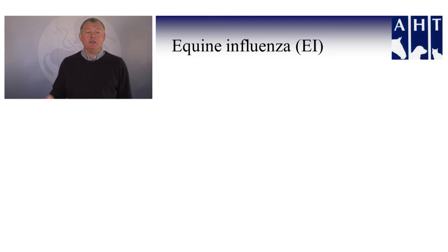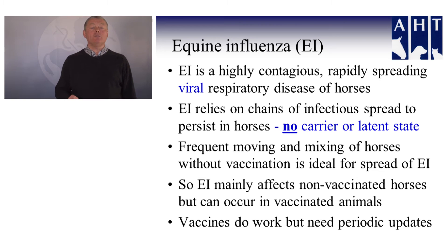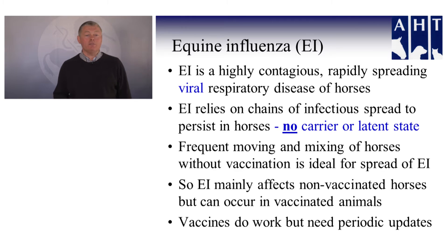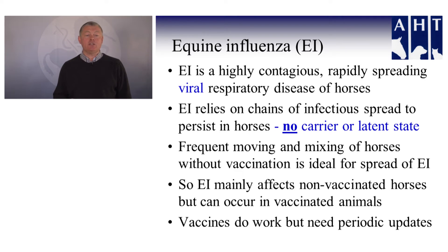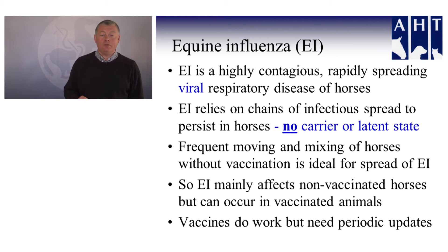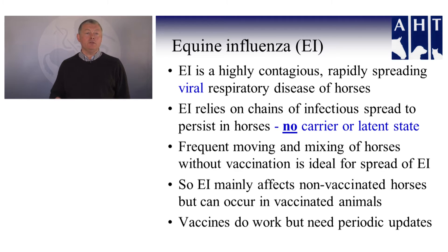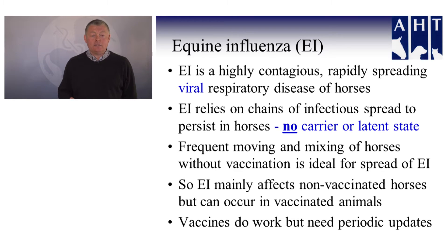I'm now going to consider the three infections I talked about. Firstly, equine influenza — this is a highly contagious, rapidly spreading, viral respiratory disease of horses. The important feature is that it relies on chains of infectious spread to persist within horses. There is no carrier or latent state for this infection, so we don't have silent carriers in the population. Frequent moving and mixing of horses in the absence of vaccination is absolutely ideal for the spread of equine influenza.